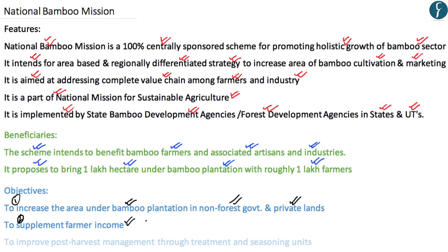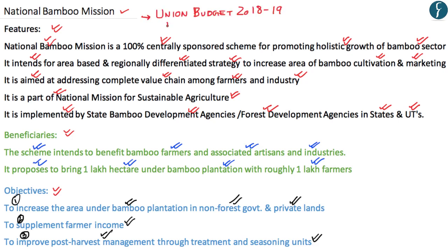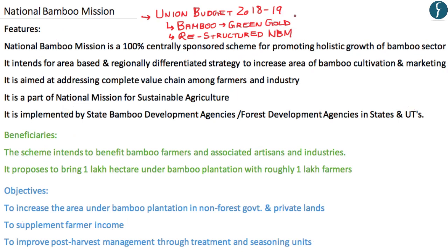The second objective of the National Bamboo Mission is to supplement farmer income — farmers can now plant bamboo on agricultural lands, which earlier they were unable to do due to government regulations, and sell it to supplement their income. The third objective is to improve post-harvest management through treatment and seasoning units. Importantly, under Union Budget 2018–19, bamboo has been called the 'green gold' and the government has restructured the mission for commercial exploitation in the northeast.